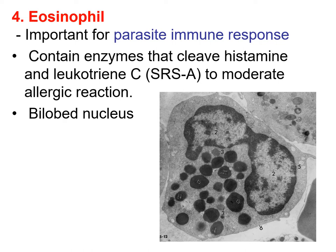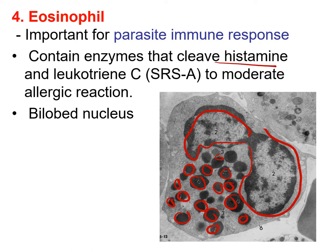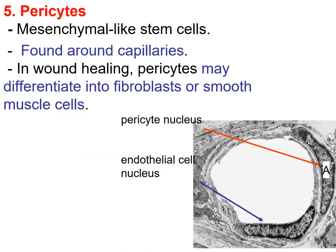The fourth cell we have is the eosinophil. These cells are important for the parasite immune response — whenever we have a parasitic infection there is an increase in the number of eosinophils. Their nucleus is bilobed and they contain pink granules that are very important in immune response against parasites. These cells contain enzymes that cleave histamine and leukotriene C to moderate the allergic reaction.